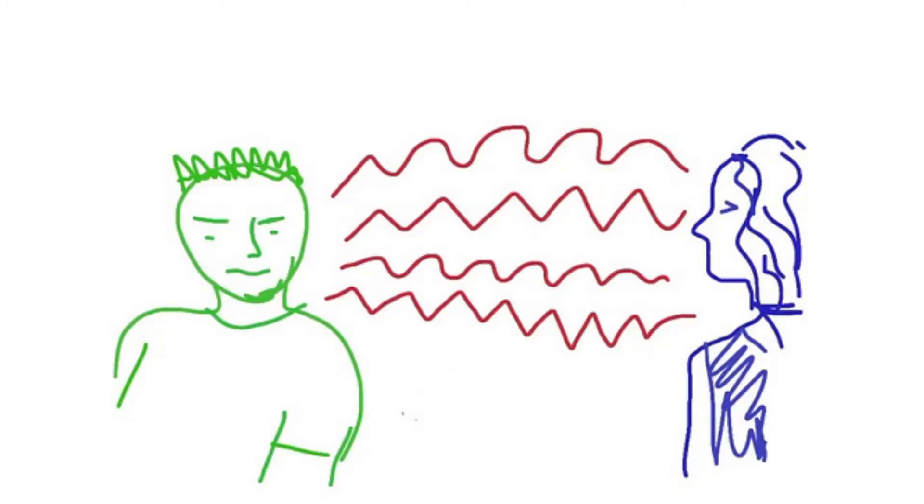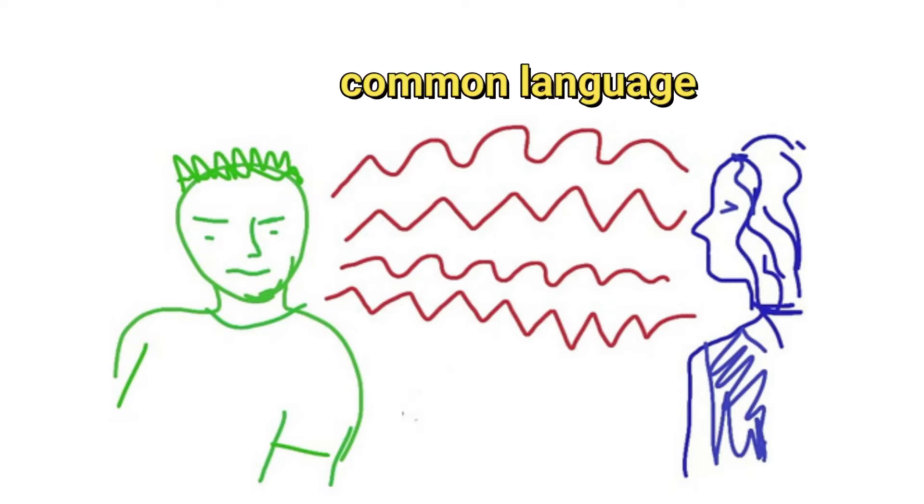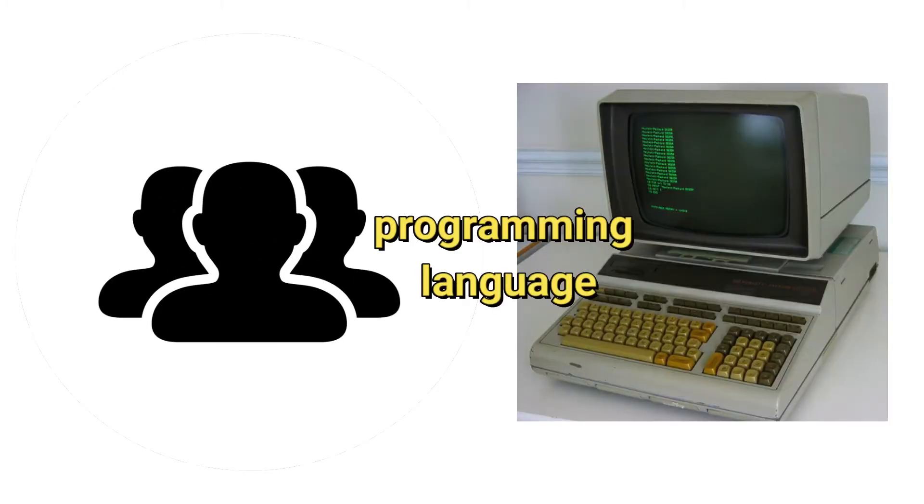So that sums up the topic of computer organization. Let us now proceed with the next topic: programming languages. Language is the medium of communication, so in order for two parties to understand each other, there should be a common language. The English language, being the universal language, may be used by humans to communicate. But for a human to communicate with a machine — for example, a computer — a programming language must be utilized. The programming language is divided into two levels.